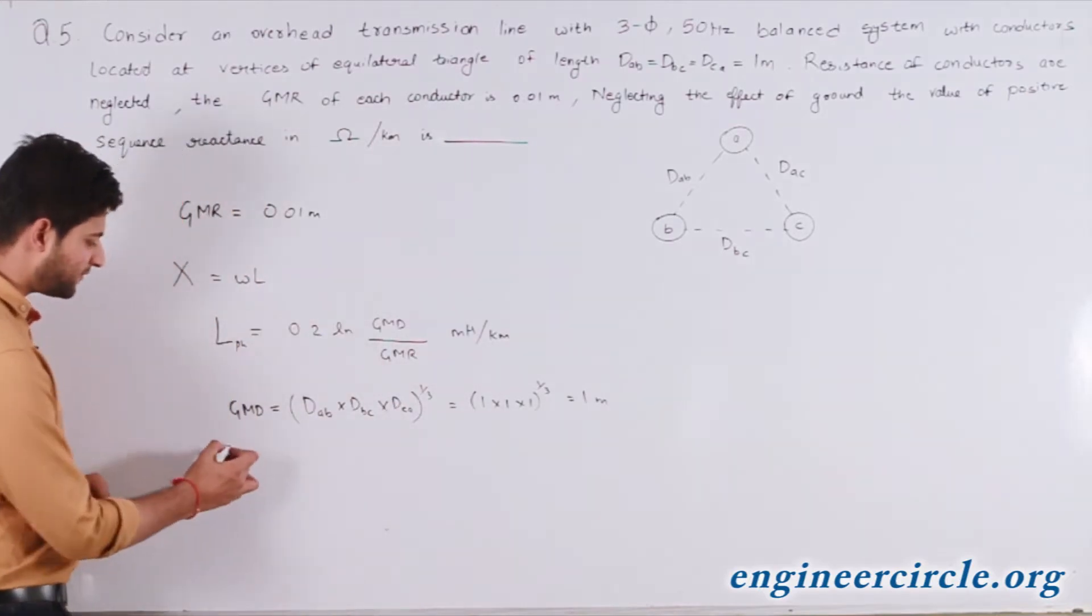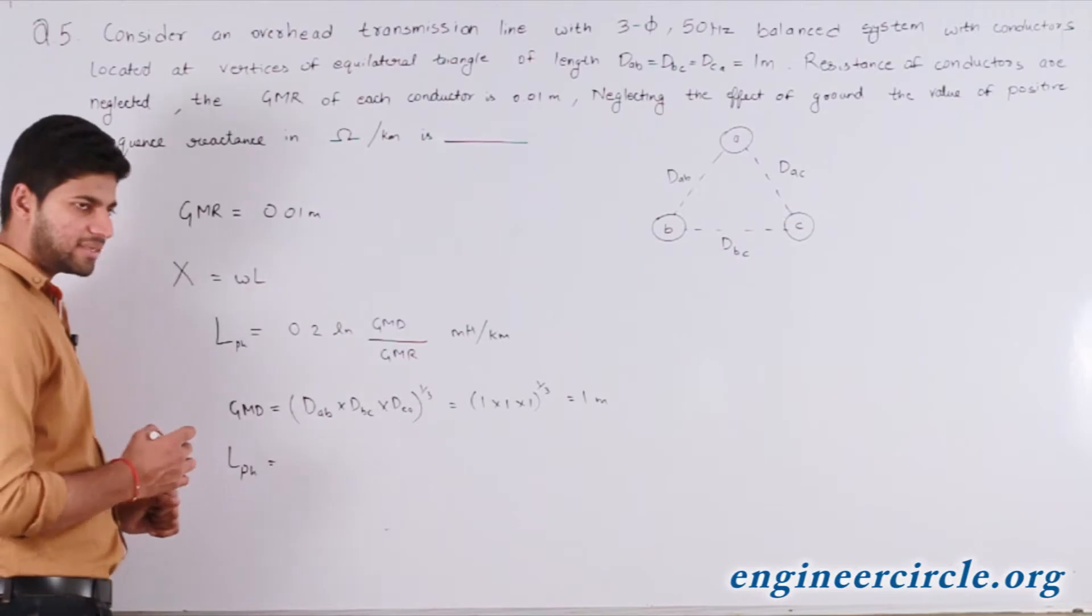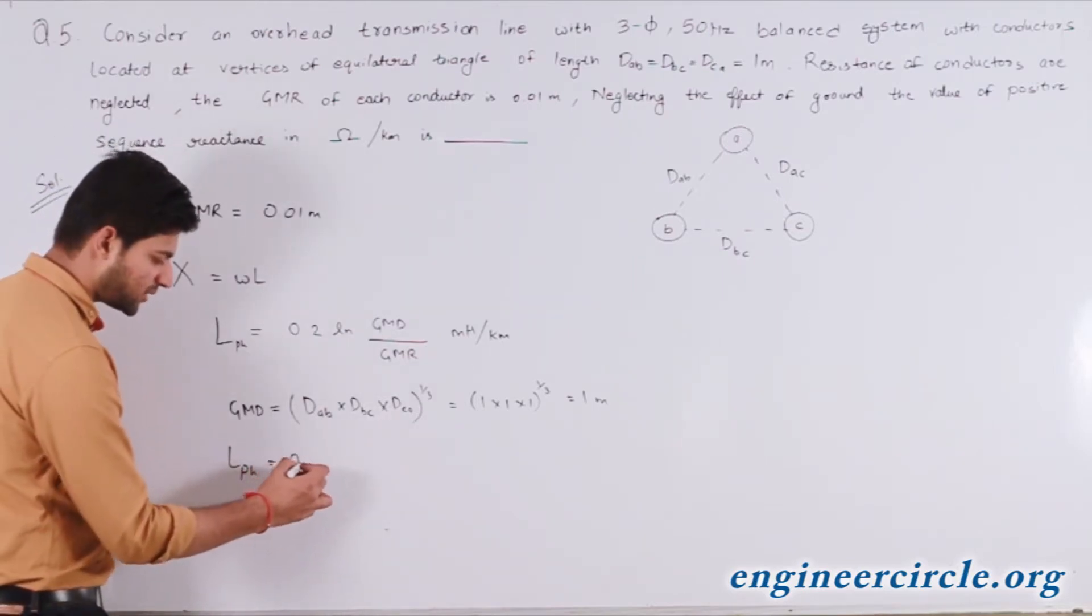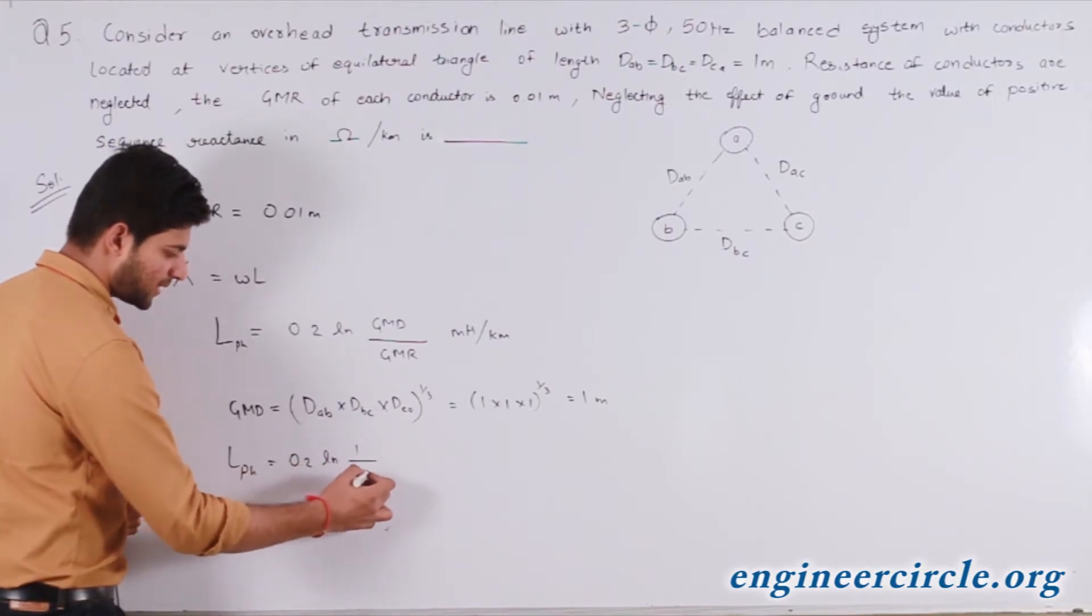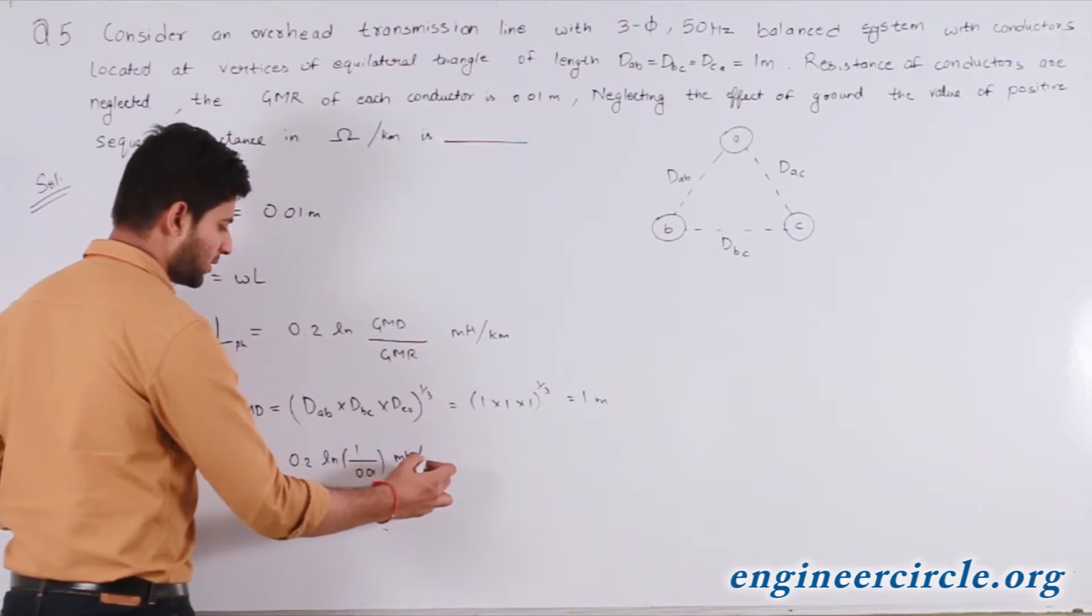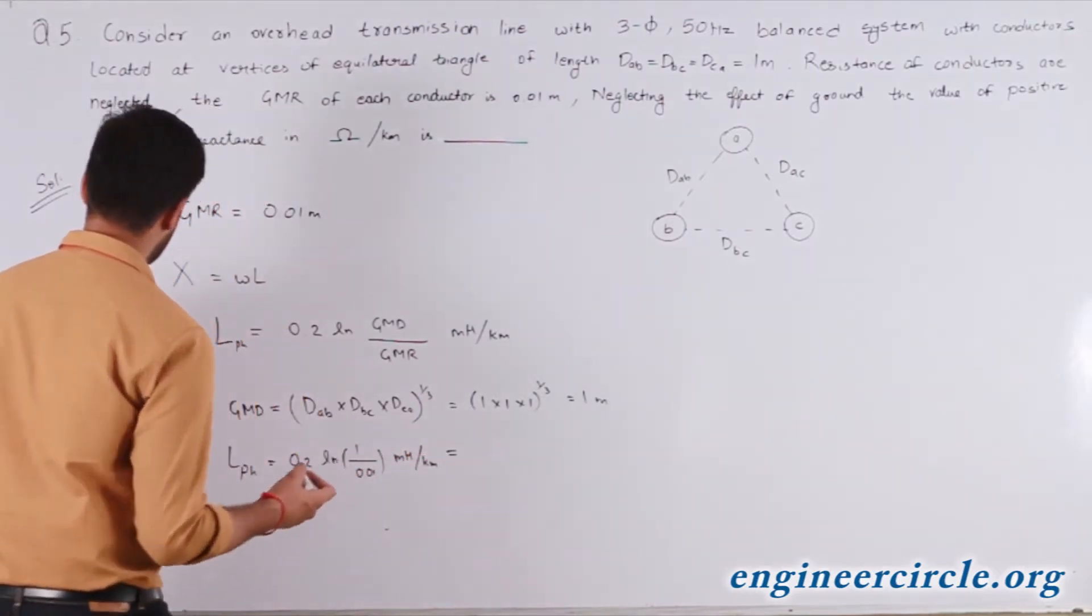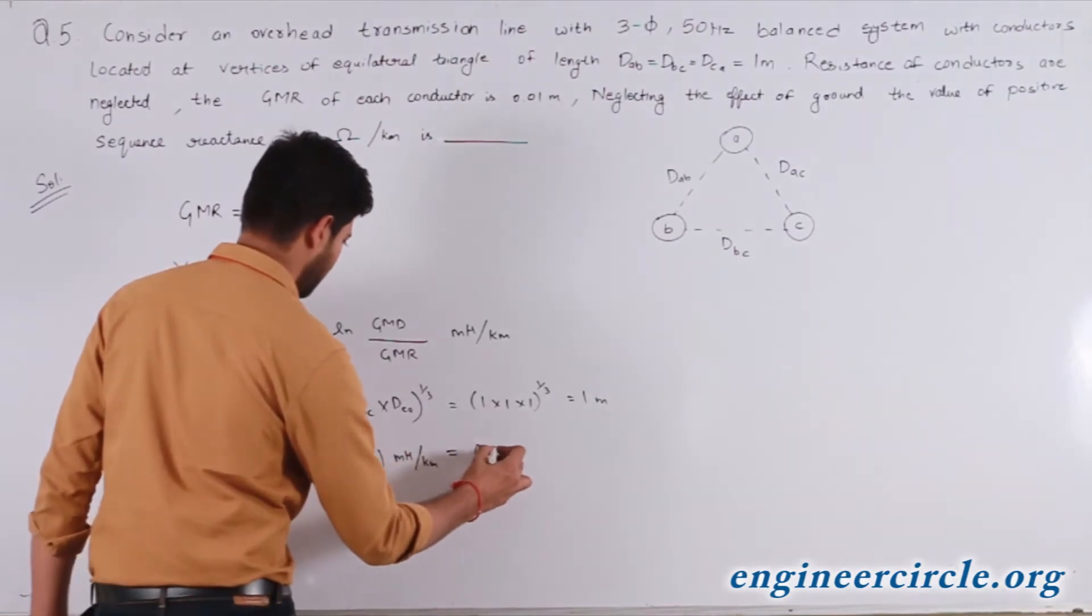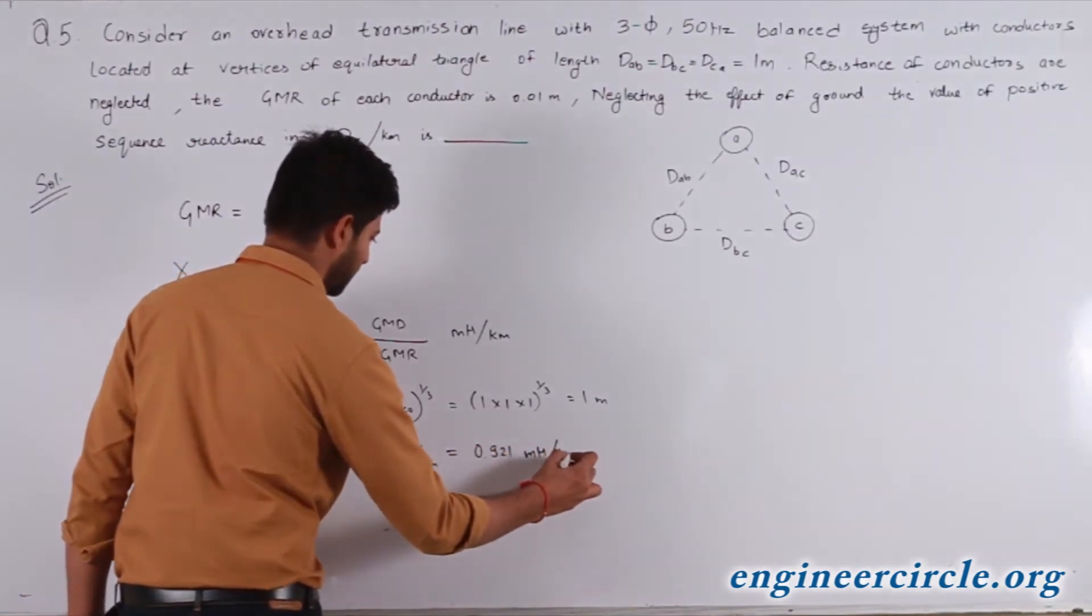So the per phase inductance here comes out to be 0.2 ln(GMD, this is 1, by GMR, 0.01) millihenry per kilometer. Solving this, we get the value of L to be 0.921 millihenry per kilometer.